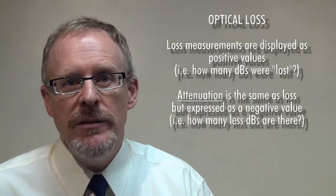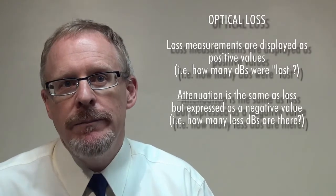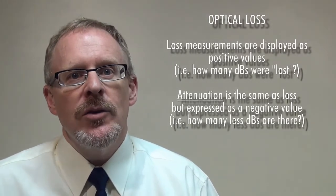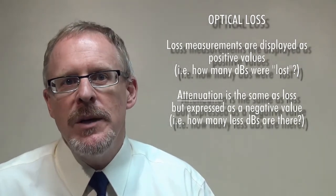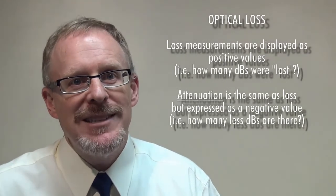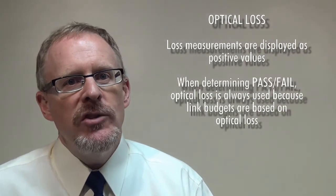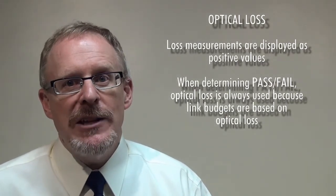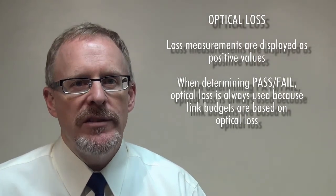Contrast this with attenuation, which is the same measurement but on the other side of the coin — in other words, how much more negative the light is. So in the example, the attenuation is -1.25 dB because the link power is 1.25 dB less than the reference level. When determining pass-fail, we always use loss as opposed to attenuation because, as we will see in the next section, link budgets are based on optical loss.